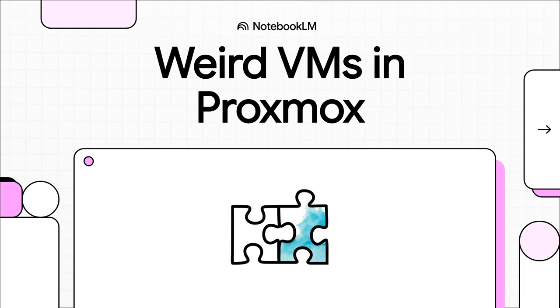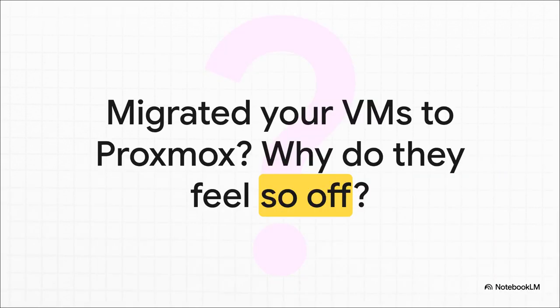So you did it. You took the plunge, you moved away from VMware, and now you're running on the awesome open source power of Proxmox. You get your virtual machines migrated over, you fire them up, and something's just not quite right — it just feels weird. The VM is technically running, you can log in, but it's just not cooperating with the host. It's one of those subtle, super frustrating issues that can make you pull your hair out.